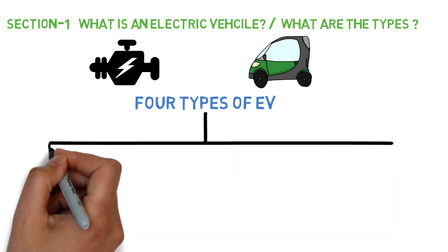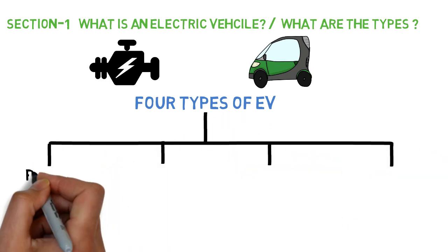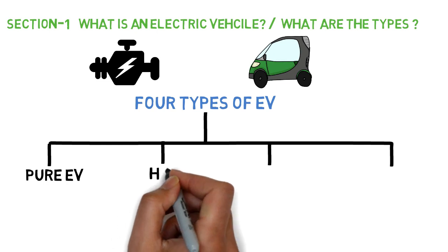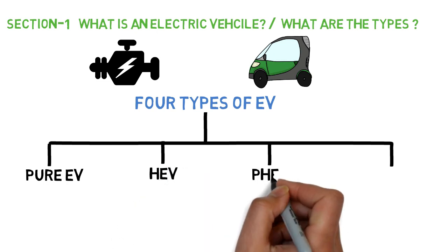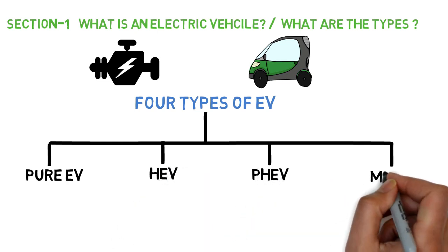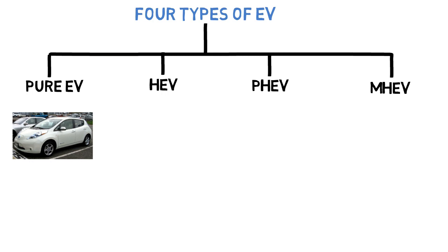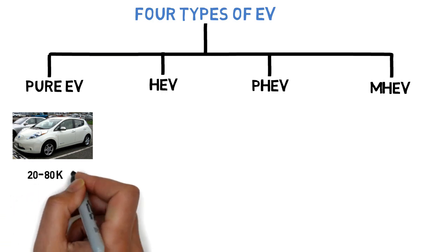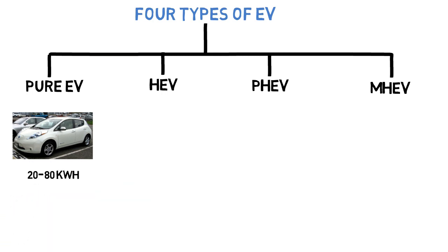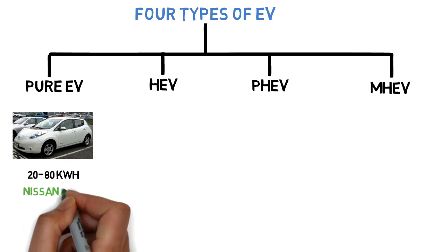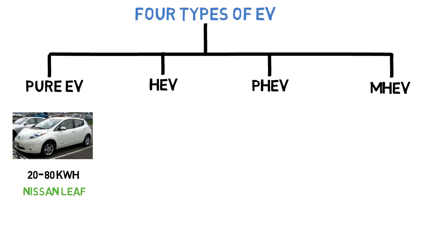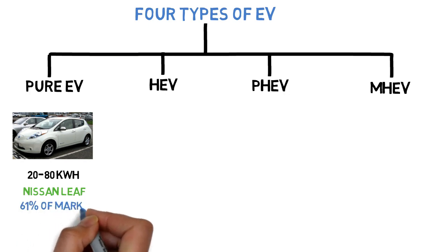The first category is the pure EV. The pure EV doesn't have an IC engine — it is only electric drive and the battery pack size is large, that is 20 to 80 kilowatt hours. Examples in this category are the Nissan Leaf and Tesla Model S. Pure EVs occupy 61% of the EV market — they are the largest chunk.